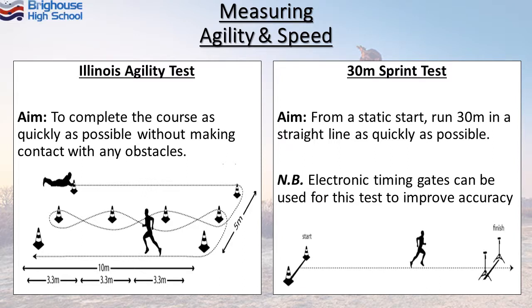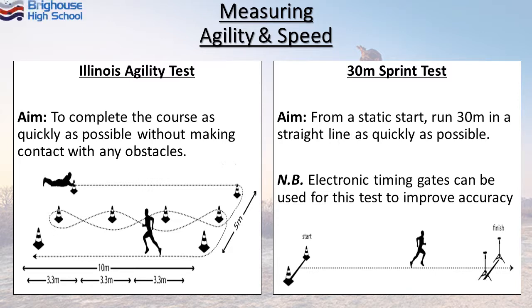Speed is one of the most simplistic tests, measured using the 30 metre sprint test. From a standing or static start, you sprint 30 metres in a straight line as quickly as possible. This is often measured with a stopwatch, but for professional athletes they will often use electronic timing gates, which improves the accuracy and therefore the reliability of the results.